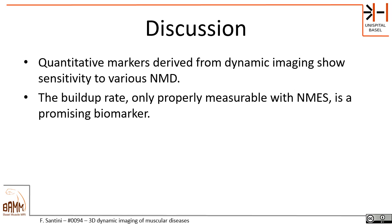The quantitative biomarkers derived from dynamic imaging show that there is definitely a sensitivity to various neuromuscular diseases. The buildup rate in conjunction with the normal strain — something that has been explored before — really seems a promising biomarker. It is really only properly measurable with neuromuscular stimulation, because neuromuscular stimulation gives us very precise timing on when the contraction starts and ends.